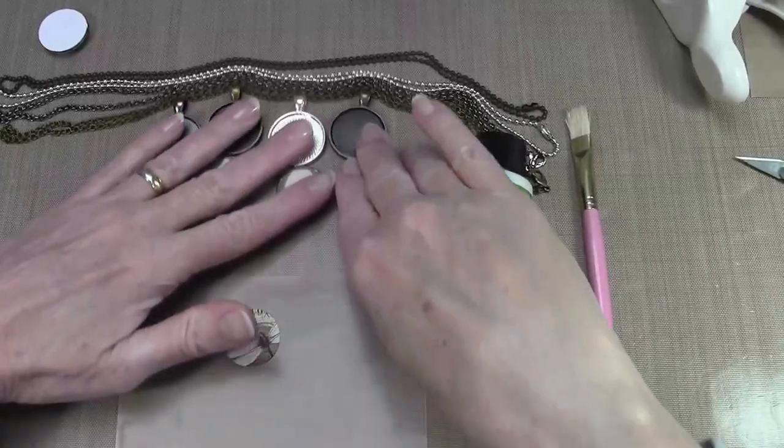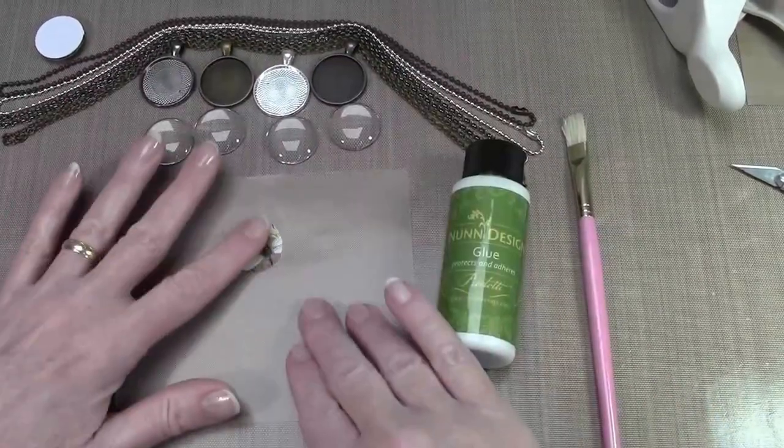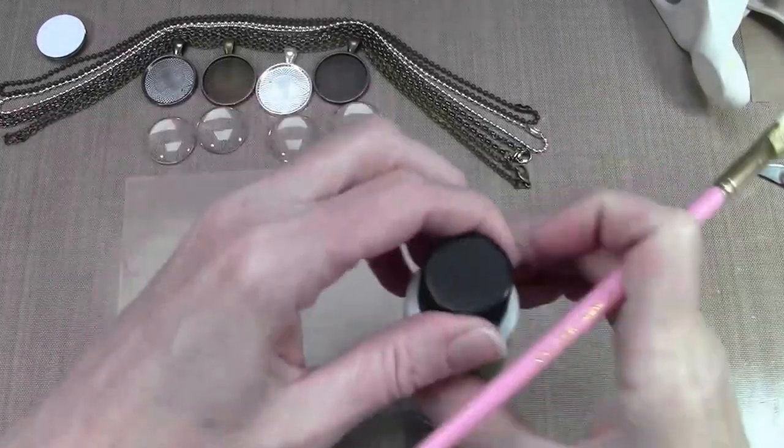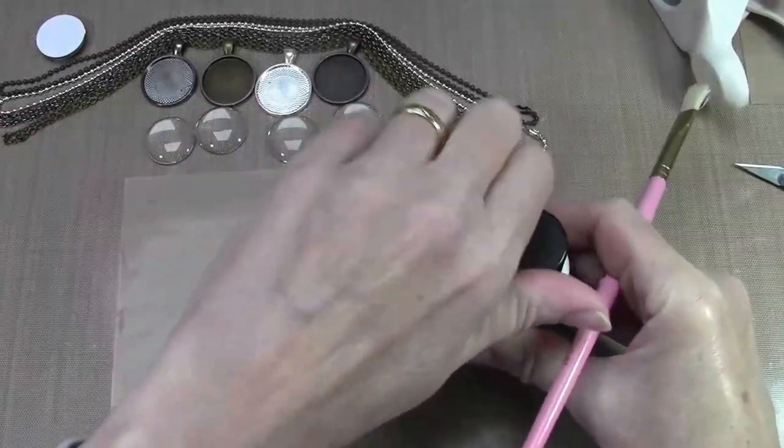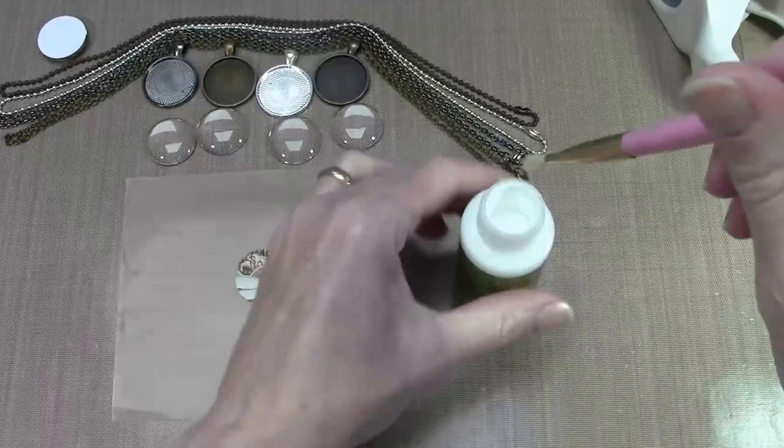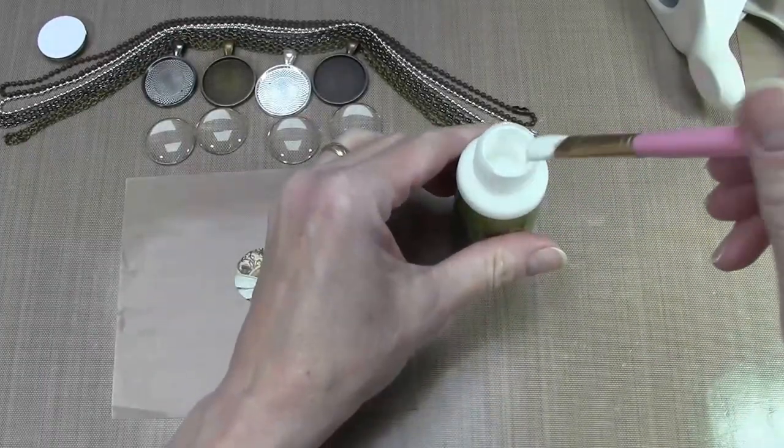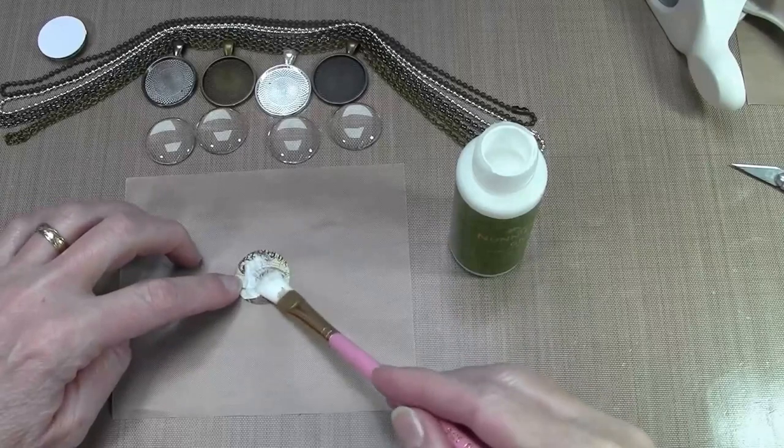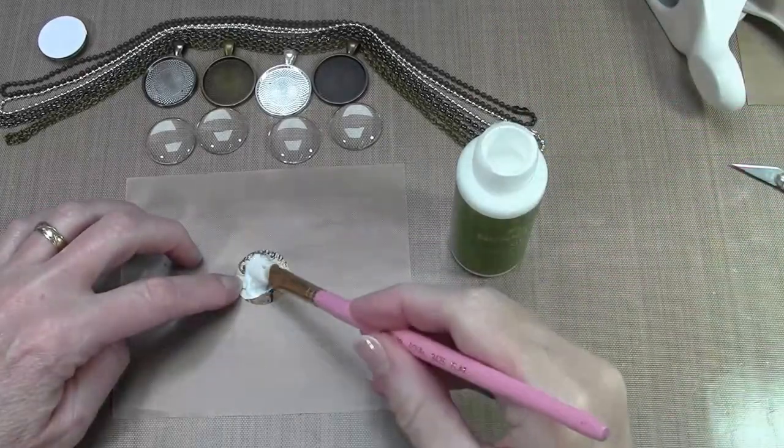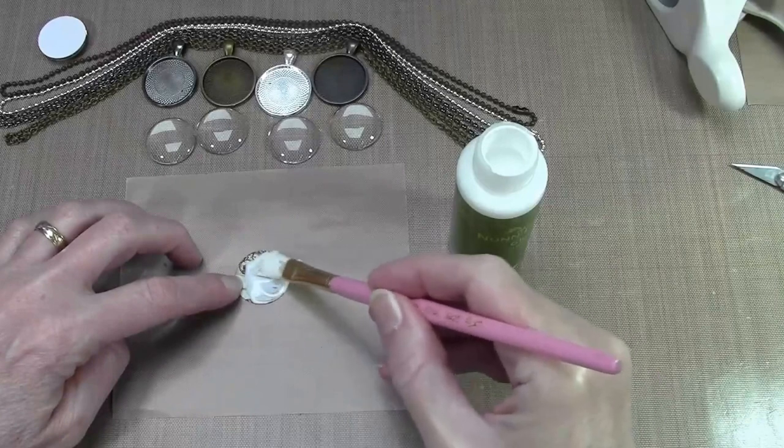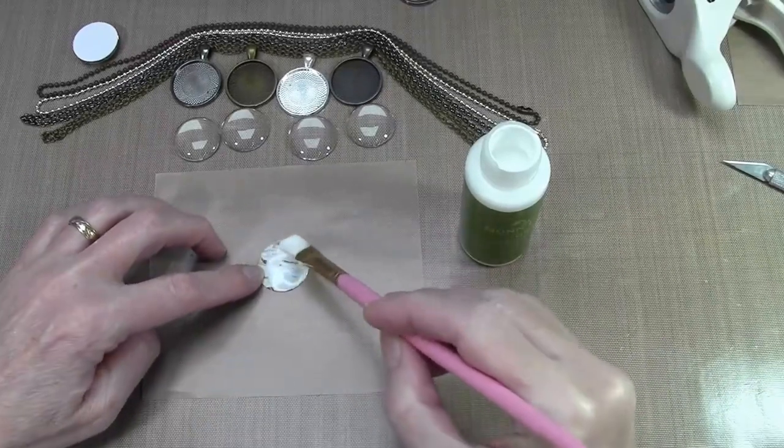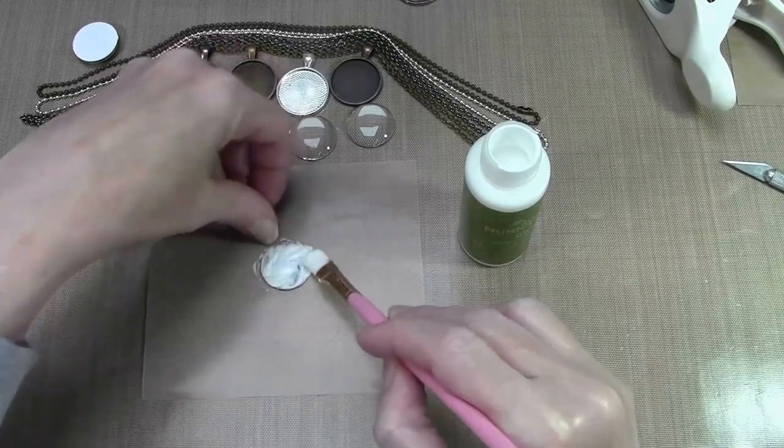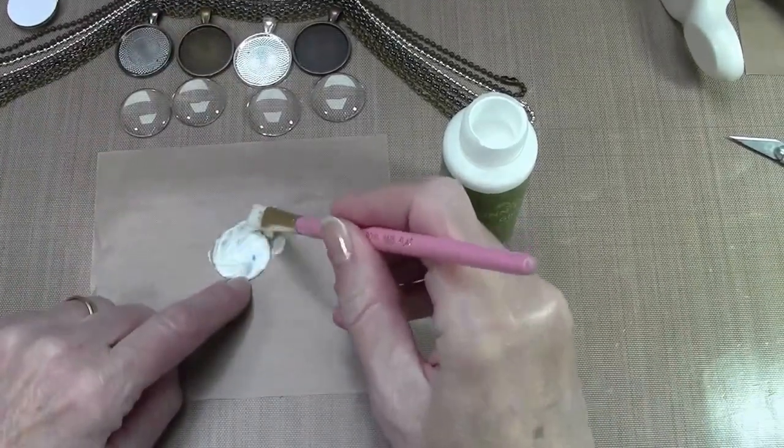So I have my image. I'm going to push everything aside so we can stay in the center. And you're going to be surprised how very easy this is. All you need to do is cover your image with a thick layer of the glue and you're working on a non-stick mat so you can be a little messy. It's okay. Once you get a good thick coating, make sure everything is covered.